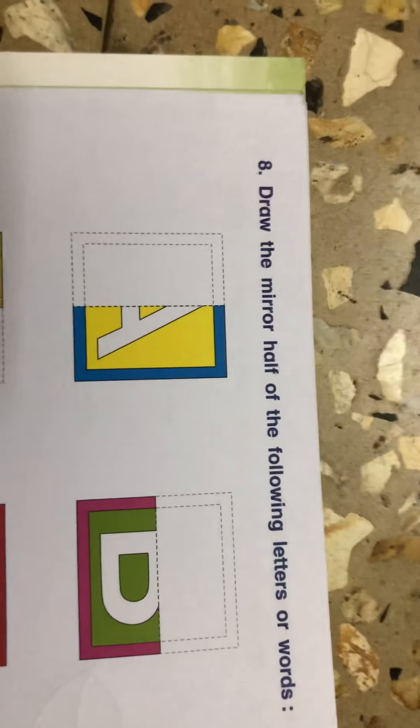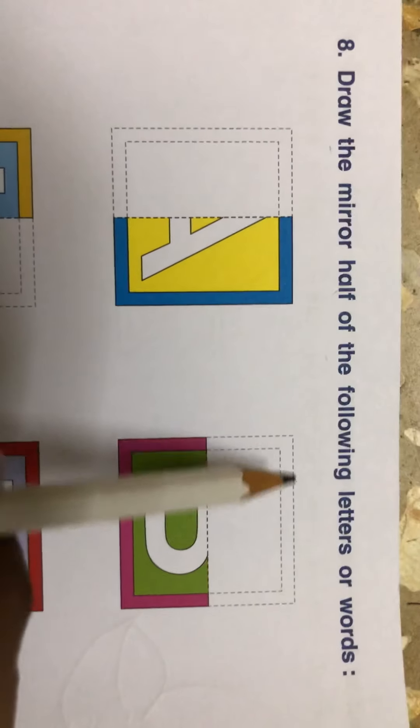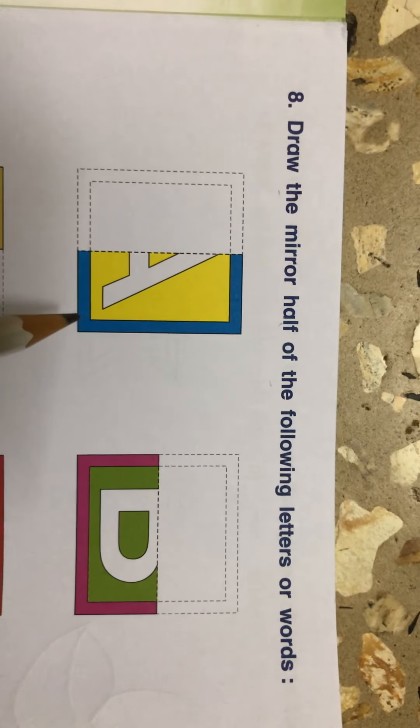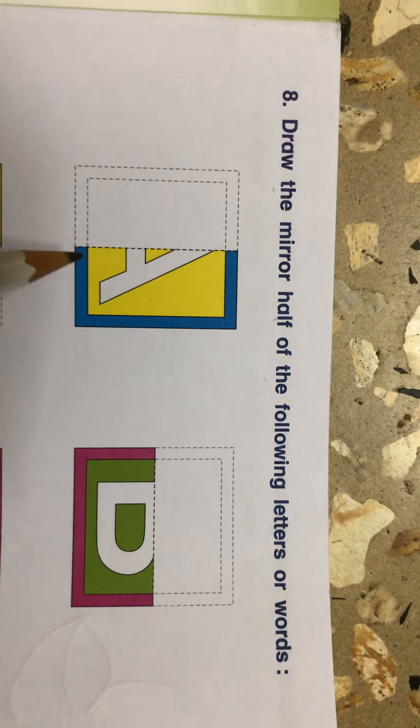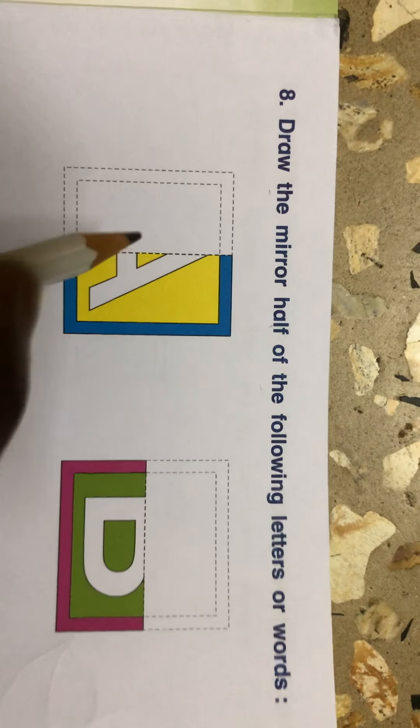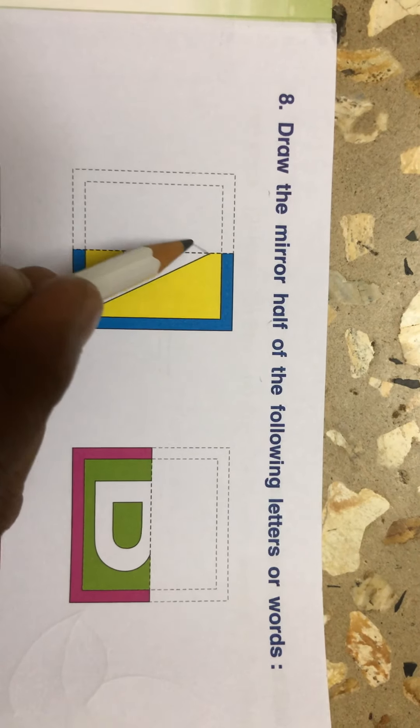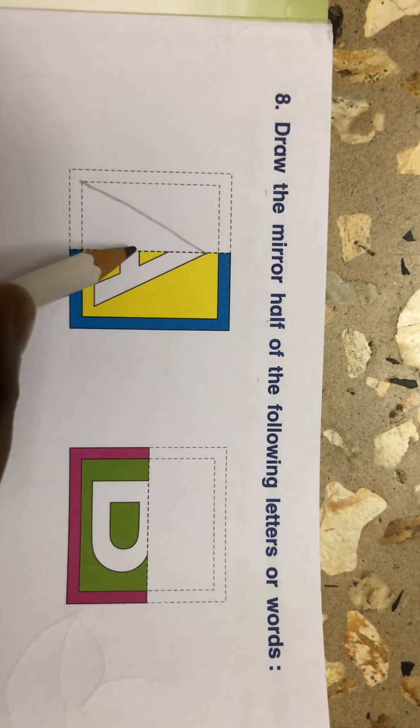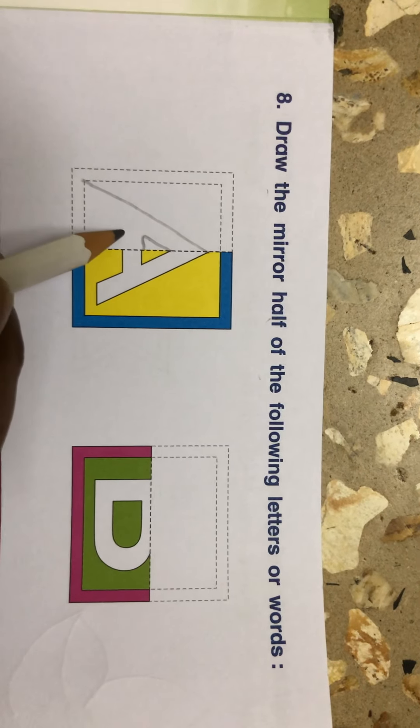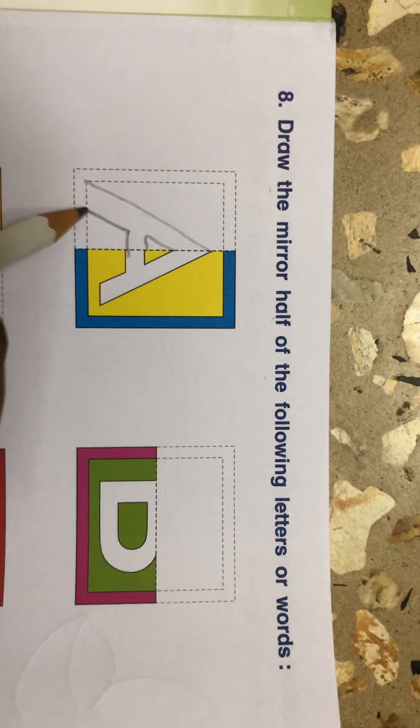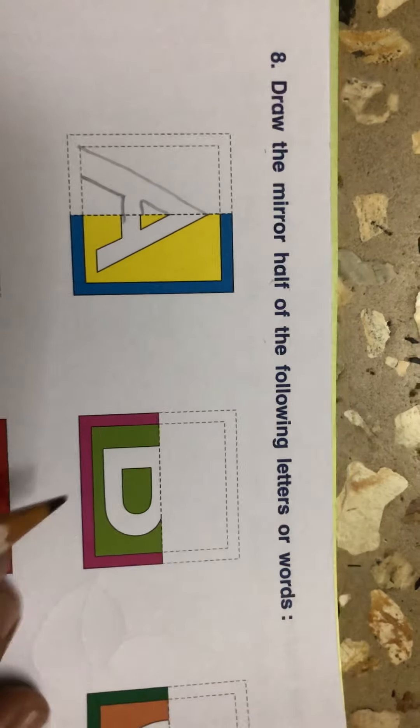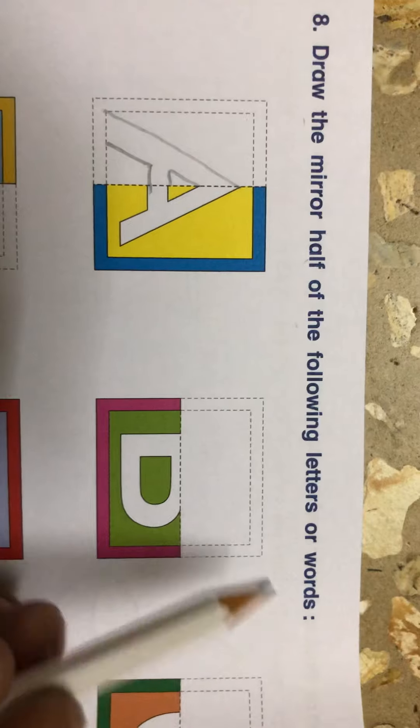Now see the next page. Same thing here. Draw the mirror half of the following letters or words. Here half part is given. Can you identify which letter it is? Very good, it is A. So you have to do like this. You have to complete the letter.